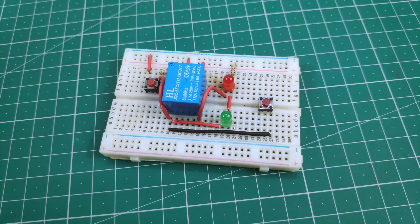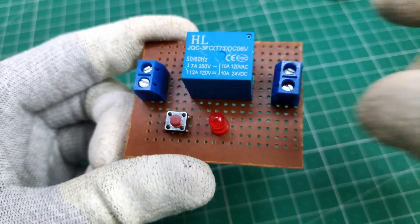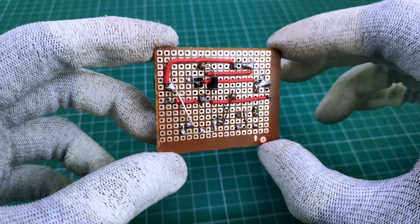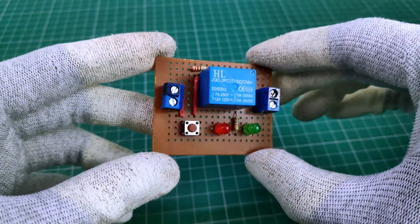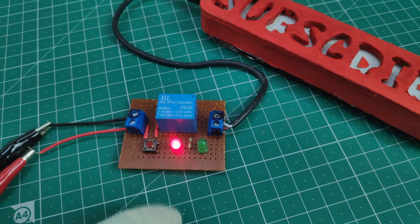After gathering all the components, I tested the circuit on the breadboard, which worked as planned. Then I assembled the circuit on the perfboard, which took about half an hour. And as you can see, after conducting some tests, this circuit prevents short circuits.